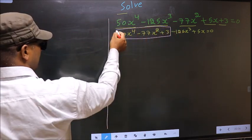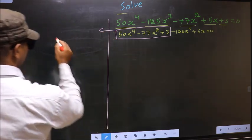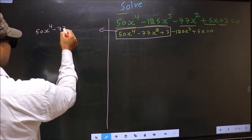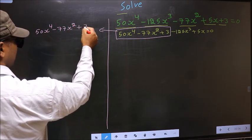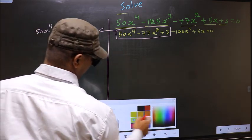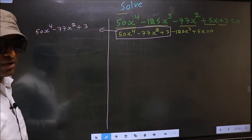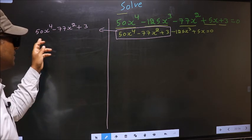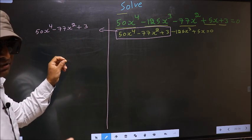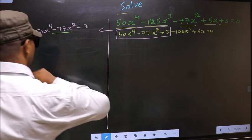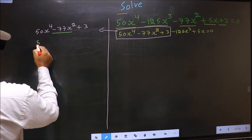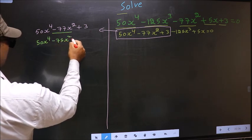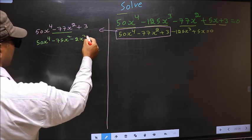We will factorize these 3 terms: 50x⁴ minus 77x² plus 3. We factorize this like a quadratic by splitting the middle term, which is minus 77x². So in place of minus 77x² we write minus 75x² minus 2x² plus 3.